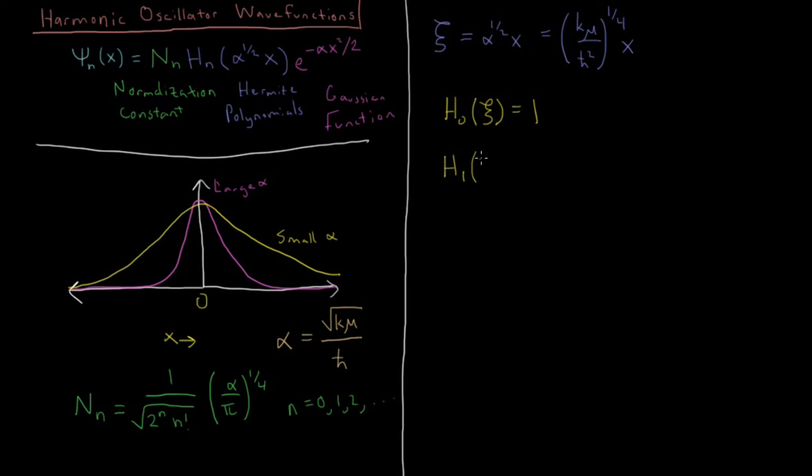Then the first solution is going to give us a first order polynomial, a linear polynomial, 2xi. So we're going to have a wave function that has two peaks, one below and one above zero. And we'll look at these later in MATLAB and see what they look like in more detail.